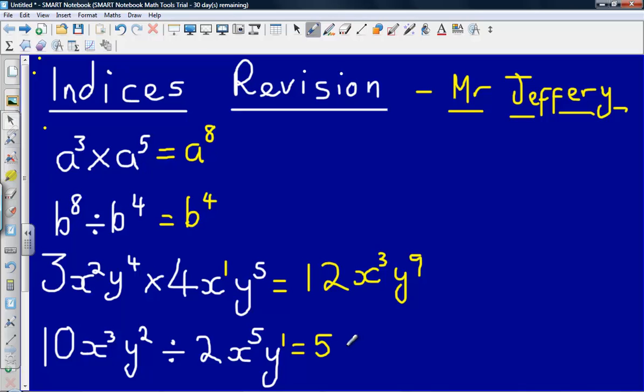Then move on to my x's, x cubed divided by x to the power of five. Now be careful here, we are subtracting the powers, so we're going to subtract three. So we're going to do three subtract five. So three minus five will give us minus two. And then lastly we've got y squared divided by y to the power of one, so that will give us y to the power of one, which again we can just leave as y.